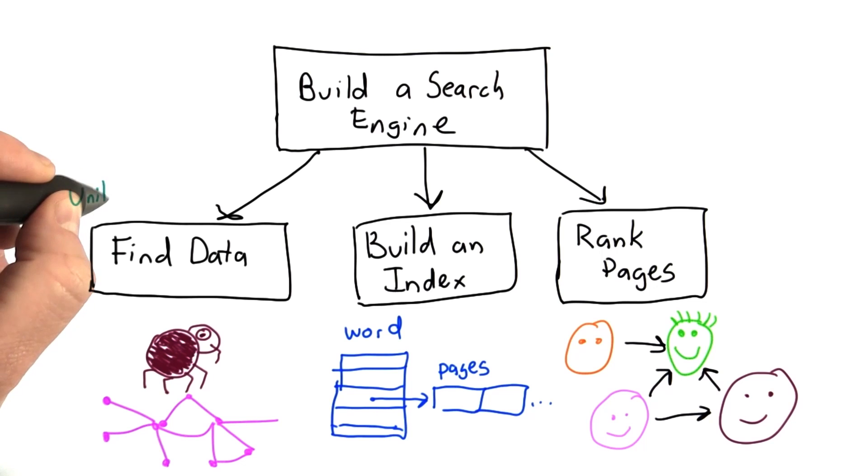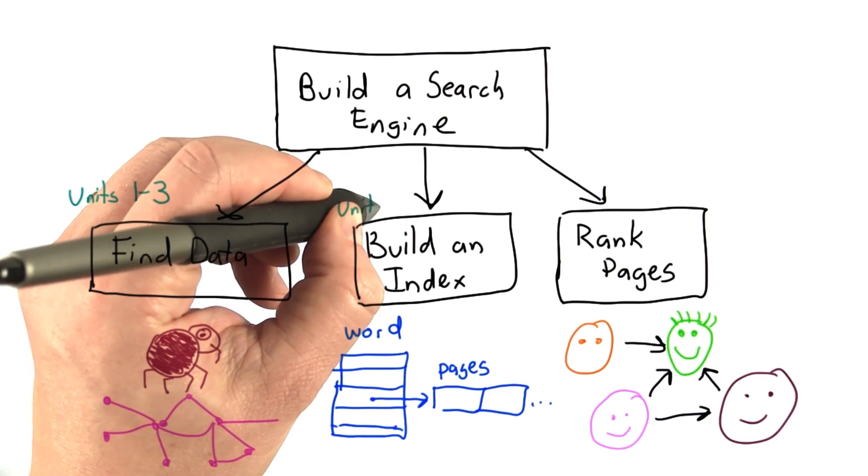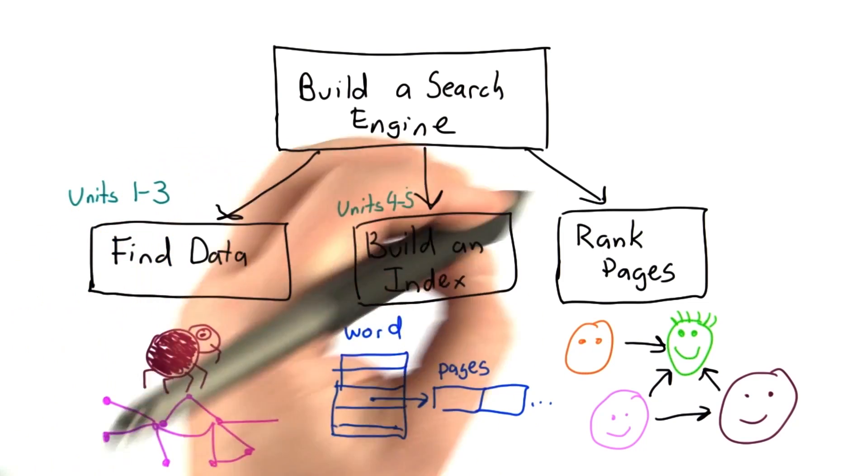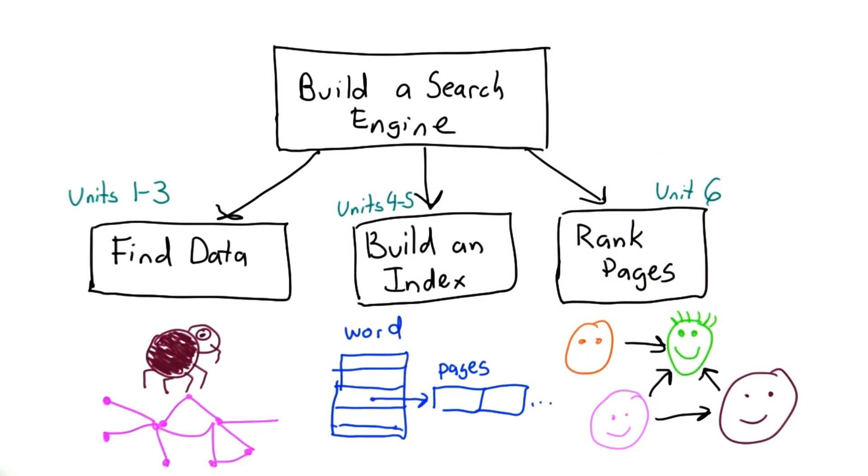The first three units will focus on building the web crawler. We'll talk more about that soon. Units four and five will cover how to respond to queries quickly. And unit six will get into how to rank results and cover the method Google uses to rank pages that made it so successful.